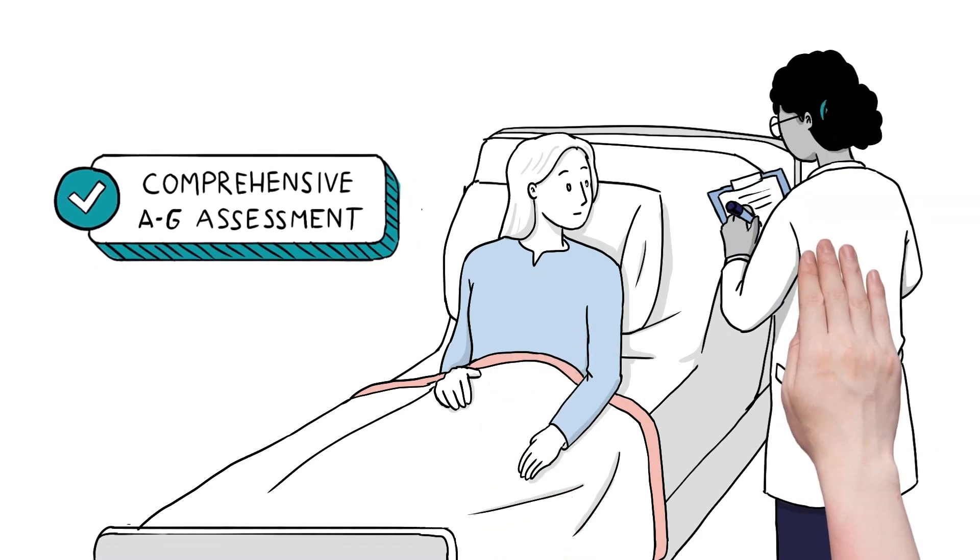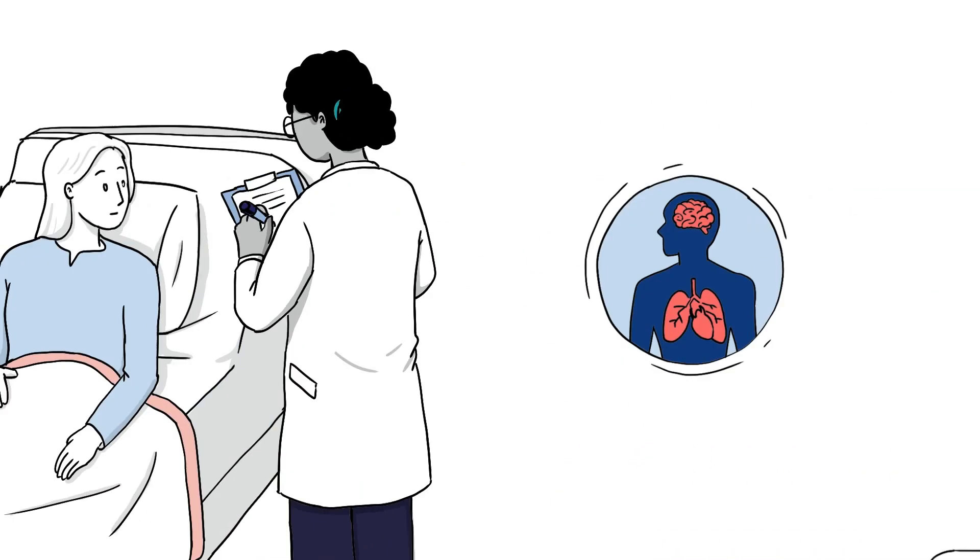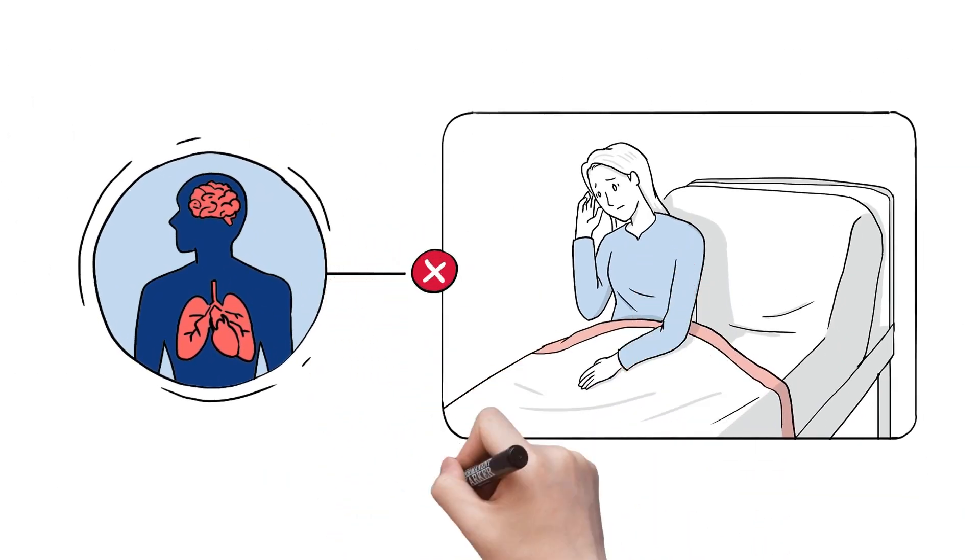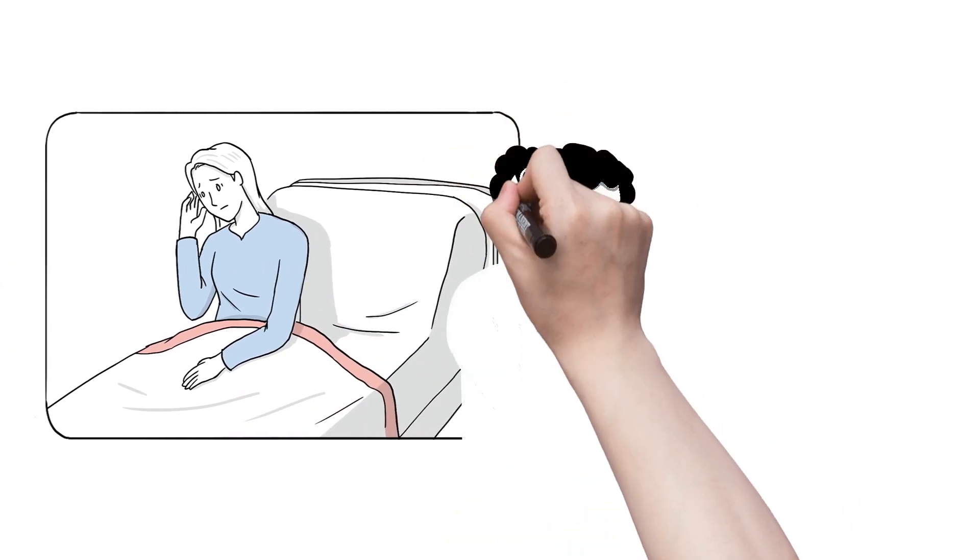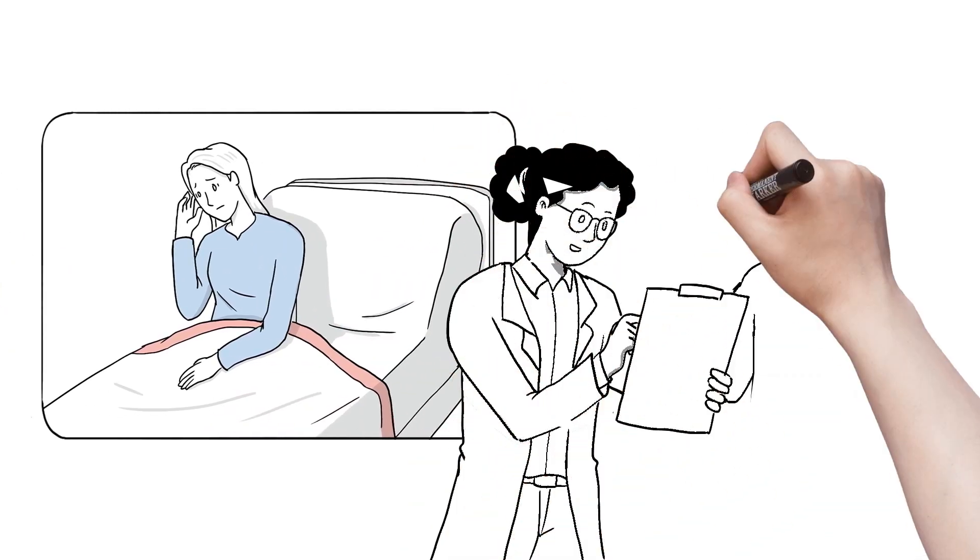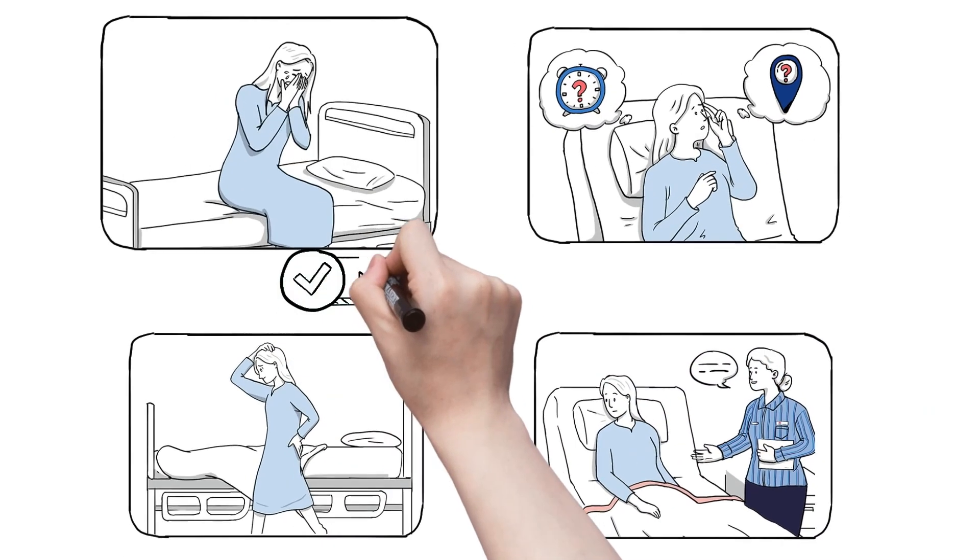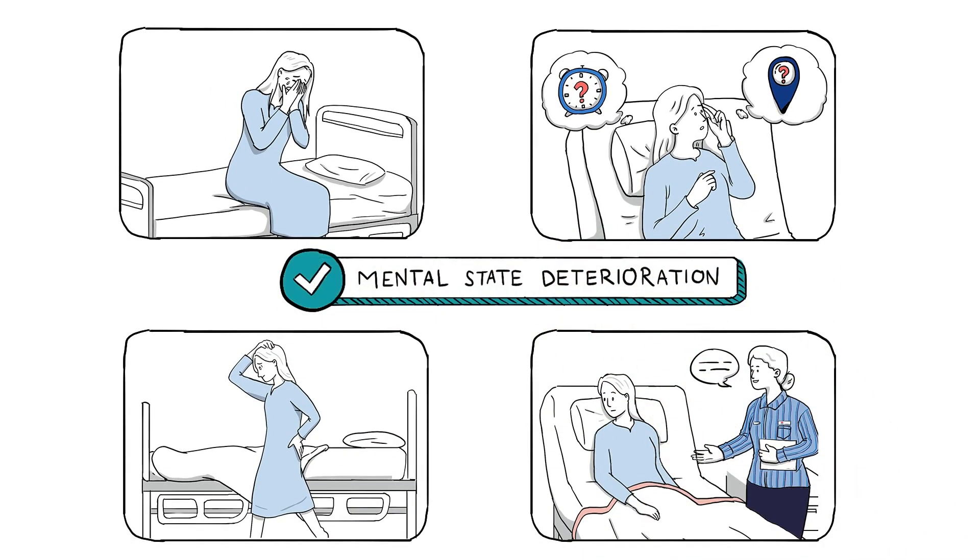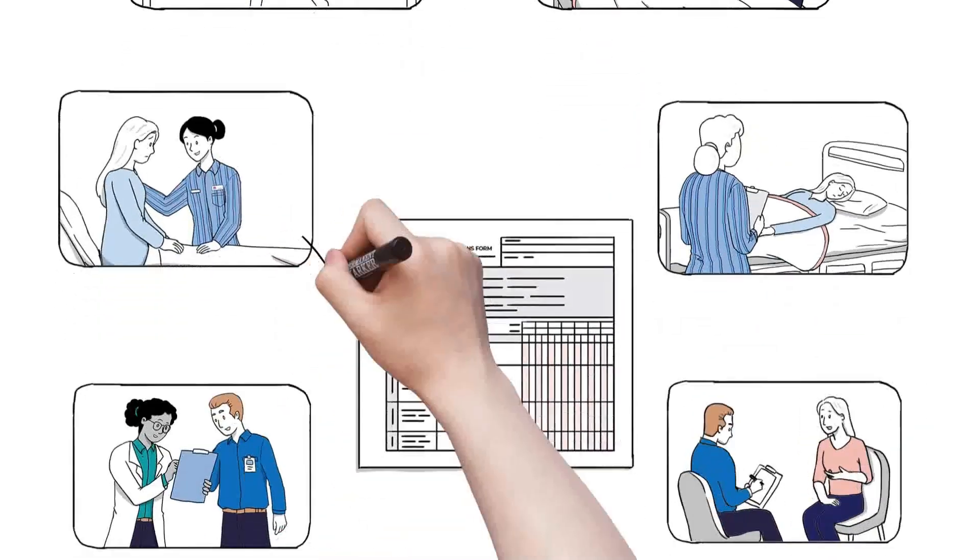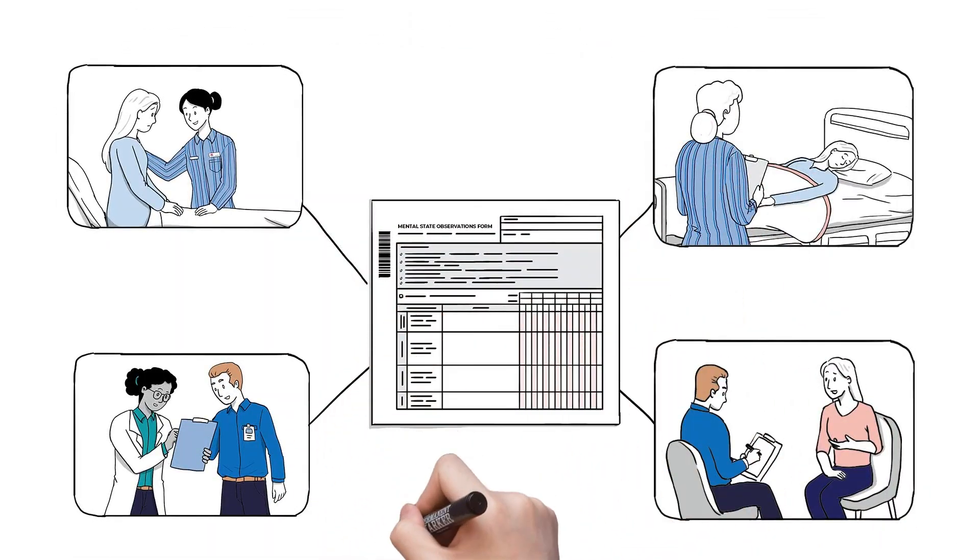Once a comprehensive A to G assessment has occurred and physiological reasons for deterioration have been ruled out, a further referral to the consultation liaison, CL, psychiatry or other mental health may occur. When a change in mental state deterioration has been identified, the mental state observation form provides guidance and outlines the next steps and actions to take.